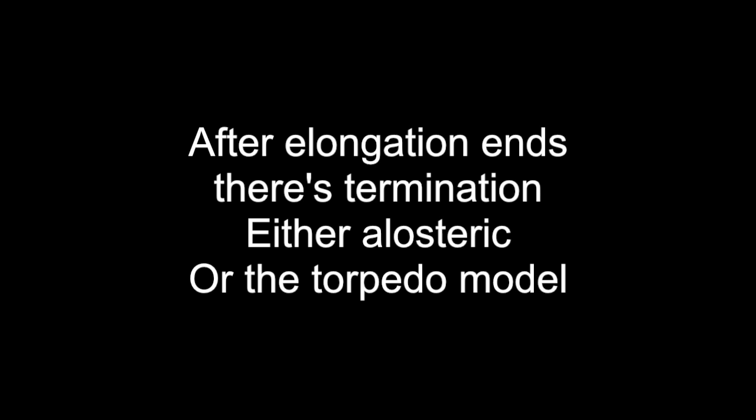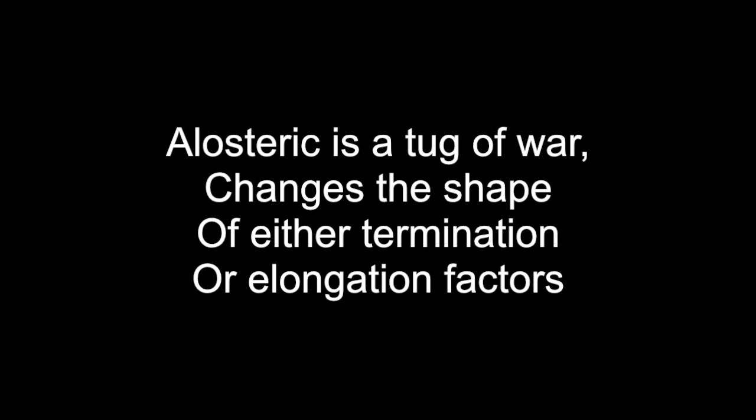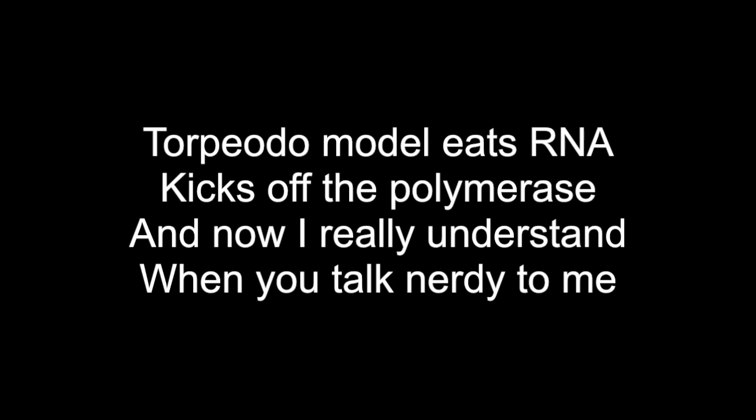Transcribe it! After elongation ends, there's termination — either allosteric or the torpedo model. Allosteric is a tug of war, changes the shape of either termination or elongation factors. The torpedo model eats RNA, picks up polymerase. And I really understand when you talk nerdy to me.